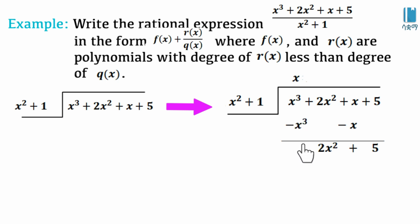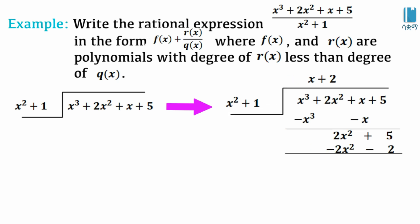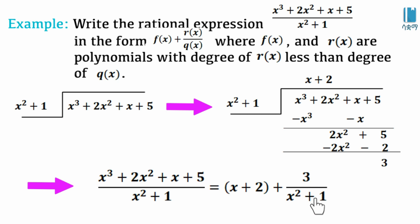Continuing the long division: bring down to get 2x squared plus 5. The leading term 2x squared divided by x squared gives 2. So 2 times (x squared plus 1) gives 2x squared plus 2. Subtracting: 2x squared minus 2x squared is zero, and 5 minus 2 gives remainder 3. The quotient is x plus 2 and the remainder is 3. Therefore, x cubed plus 2x squared plus x plus 5 over x squared plus 1 equals x plus 2 plus 3 over (x squared plus 1).